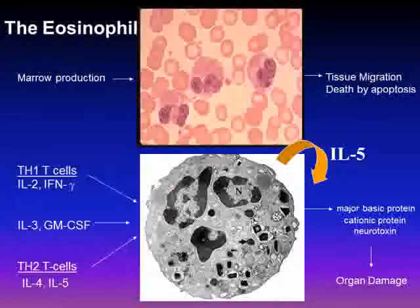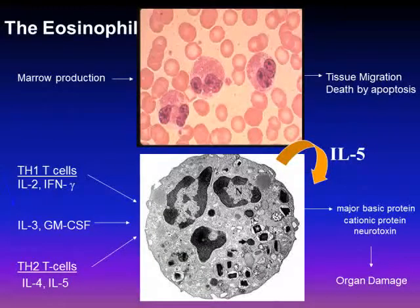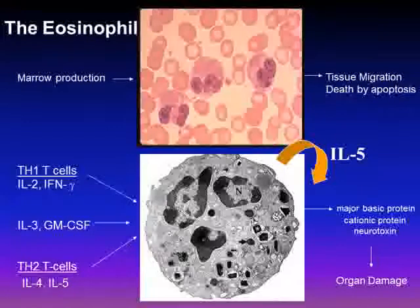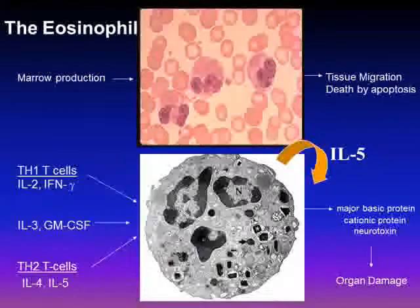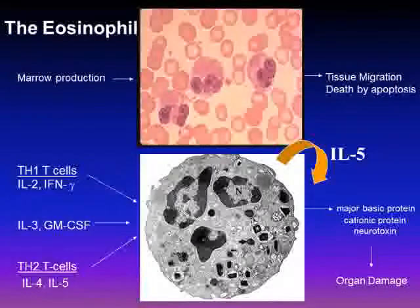There are so-called type 1 helper T cells that produce interleukin-2 and interferon gamma, whereas type 2 helper T cells produce growth factors such as interleukin-4 and interleukin-5. Interleukin-5 in particular is the most important eosinophil differentiation, growth, and survival factor. Both T cell subsets produce the eosinophilic cytokines interleukin-3 and GM-CSF, or granulocyte macrophage colony stimulating factor. Eosinophil infiltration and elaboration of toxic protein substances, including major basic protein and eosinophil cationic protein, can lead to organ damage.